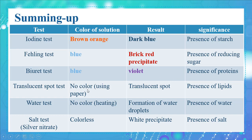In the translucent spot test, there is no color because it is done using paper, so we observe a translucent spot indicating the presence of lipids. In the water test, there is also no color because it is done by heating, and there will be formation of water droplets indicating the presence of water. Finally, in the salt test, we use silver nitrate solution, which is colorless, and we obtain a white precipitate indicating the presence of salt.